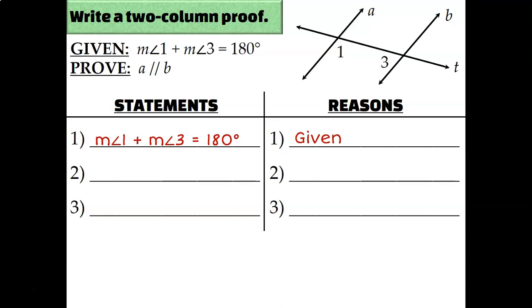I'm trying to prove that line A and line B are parallel. To figure out what direction to go, it's helpful to look at what kind of pair of angles you have. Angle 1 and 3 are consecutive interior angles because they're in between lines A and B, making them interior, and they're on the same side of transversal T, making them consecutive. So I'm going to try to show that 1 and 3 are supplementary.